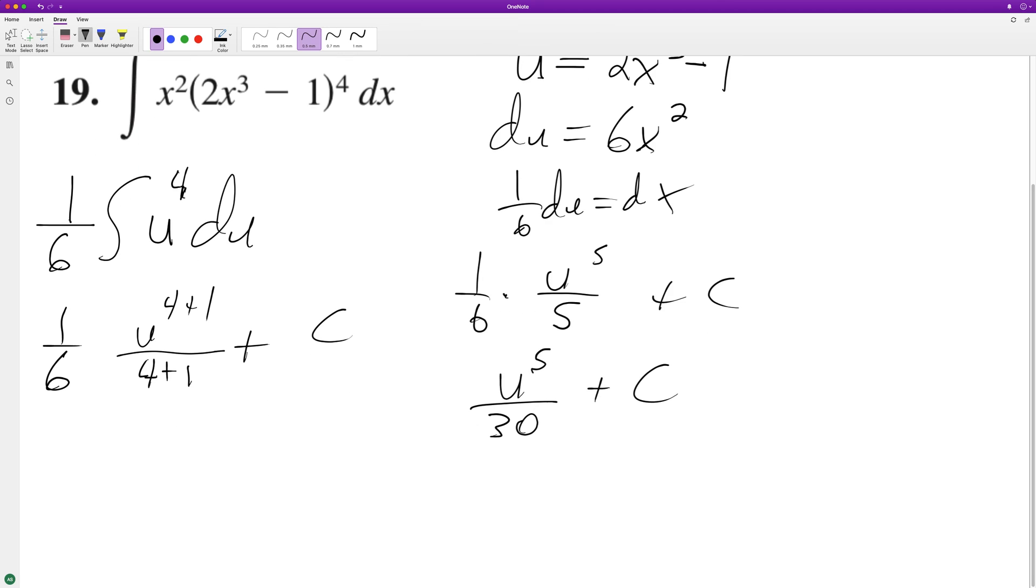All right, we can go ahead and sub back in for this. So we have 2x cubed minus 1 raised to the 4th over 30 plus C.